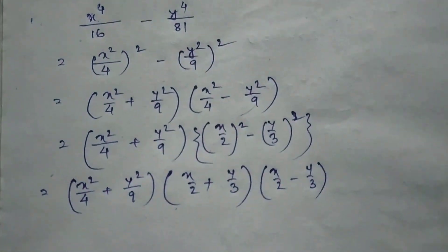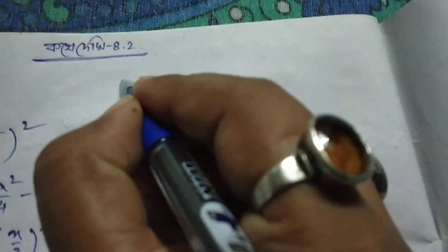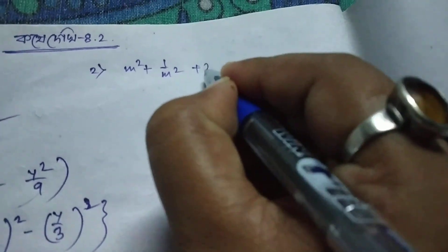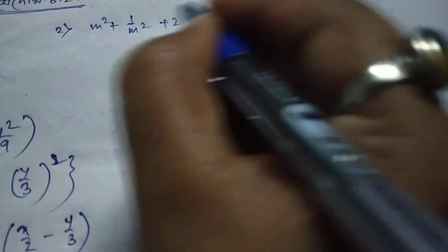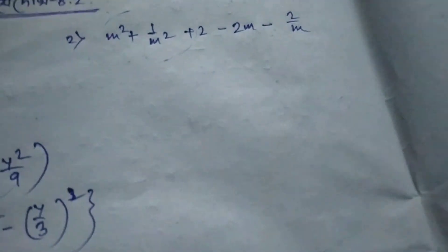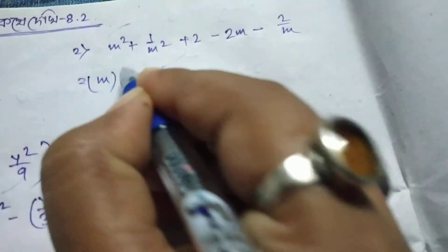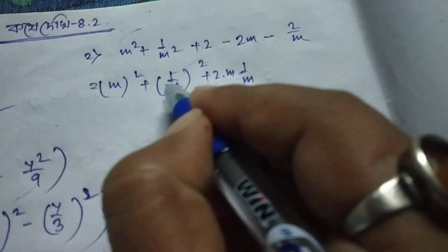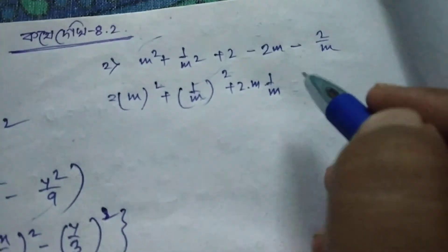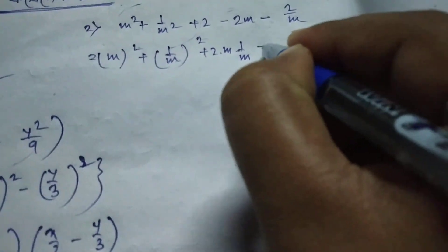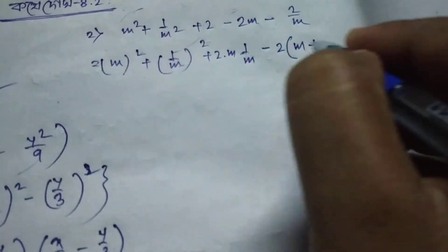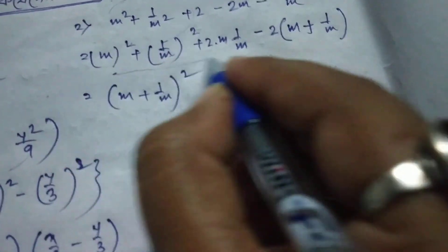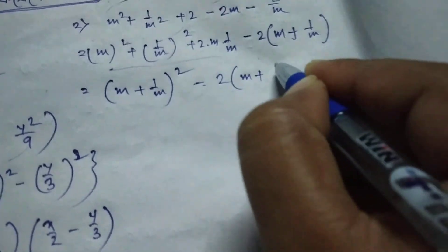This is the formula. Next formula: m square plus 1 by m square plus 2 minus 2m minus 2 by m. This is the formula. m square plus 1 by m plus 2 into m into 1 by m. m plus 1 by m whole square, minus 2 into m plus 1 by m.